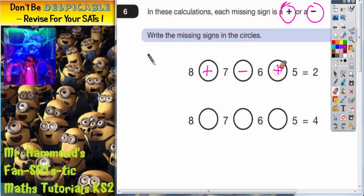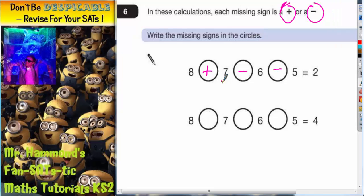So maybe we need to have 2 minuses. So let's try changing that to a minus. 8 add 7 is 15, 15 take away 6 is 9, and 9 take away 5 is 4. Now that doesn't work because we want 2, but at this point we should note that this one is actually 4.